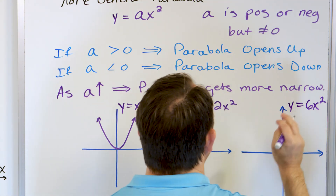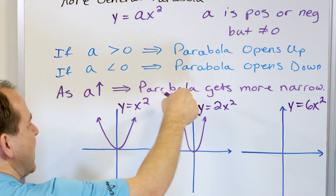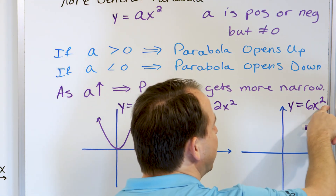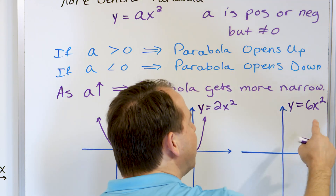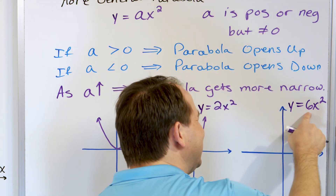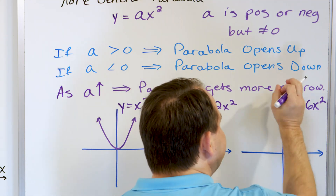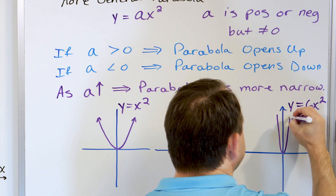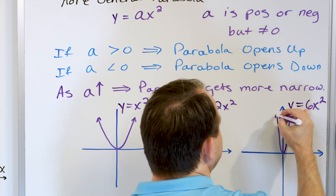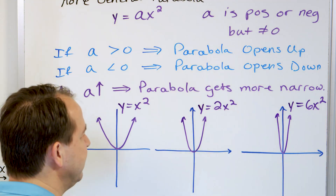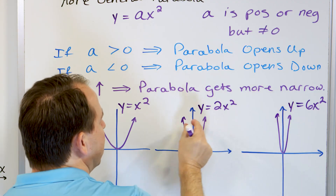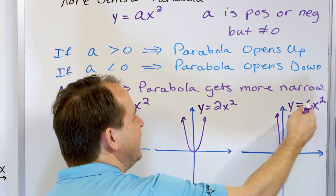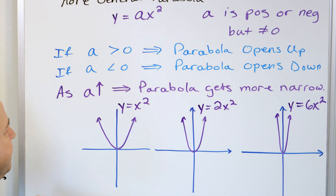Now let's try six x squared. Not one x squared, not two x squared, but six x squared. That means every point from the x squared part gets multiplied by six, so they all get shifted up and this parabola is going to be incredibly steep — much more narrow than the two x squared case, about six times as steep.